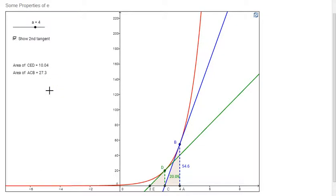Now I want you to calculate this. I have the area of triangle CED is 10.04, area of triangle ACB is 27.3. Please find the ratio of the bigger one to the smaller one, that 27.3 divided by 10.04. Can you tell me what that is in the chat, regular chat? You can use your calculators if you need.